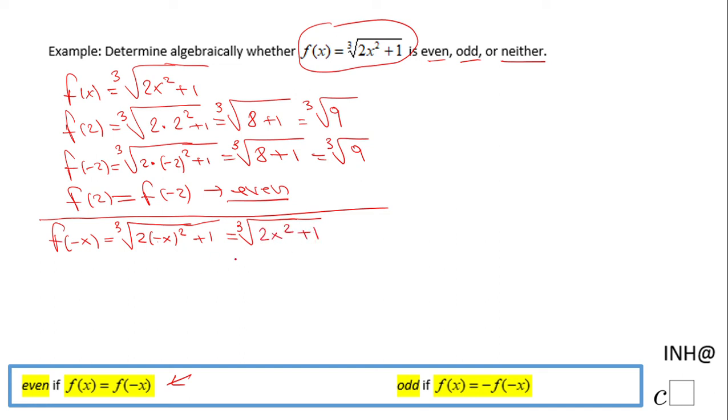And we notice now these two expressions are the same: f(x) = f(-x). This is the algebraic way to prove this function is even.